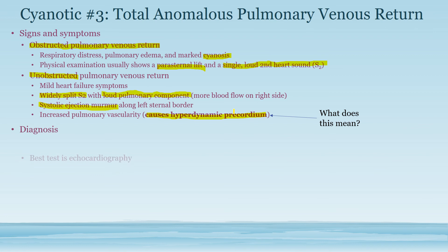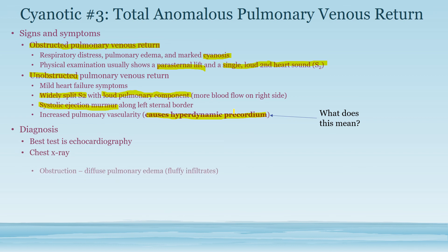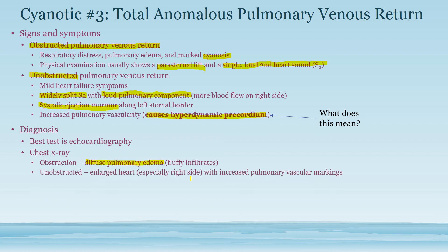For diagnosis, the best test is echocardiography, but the first tests performed are chest X-ray and EKG. In the obstructive form, you will see diffuse pulmonary edema due to massive backup of blood. In the non-obstructive form, you get a very enlarged heart with increased pulmonary vascular markings — not from obstruction and backup, but from increased blood flow through the lungs.